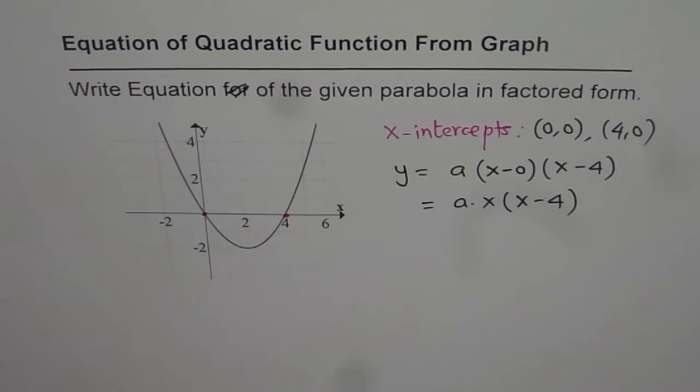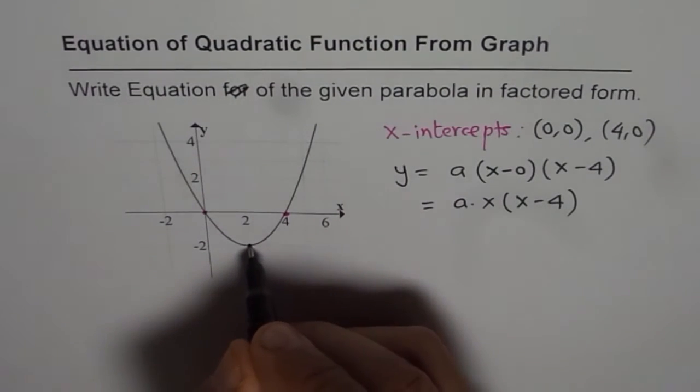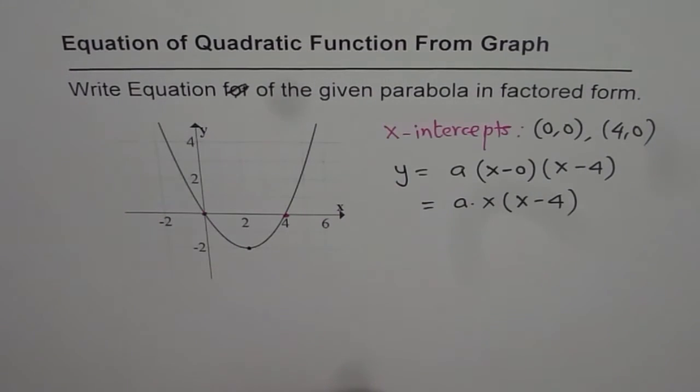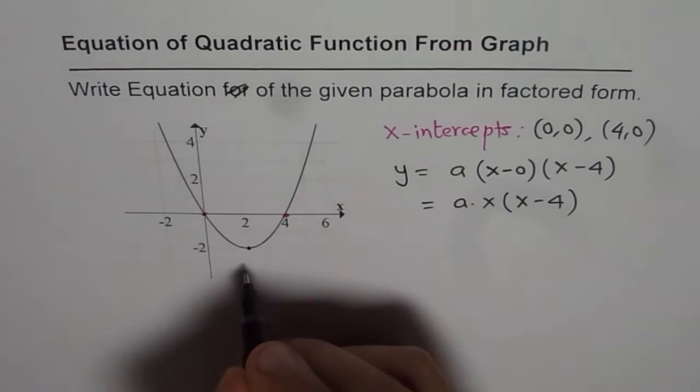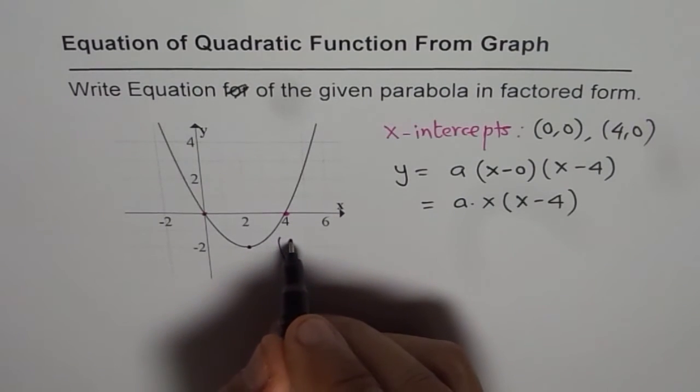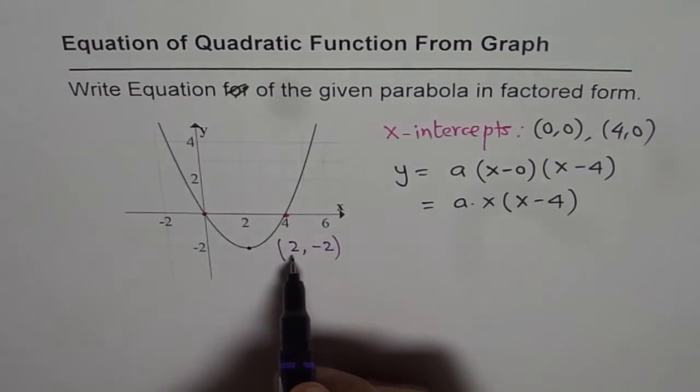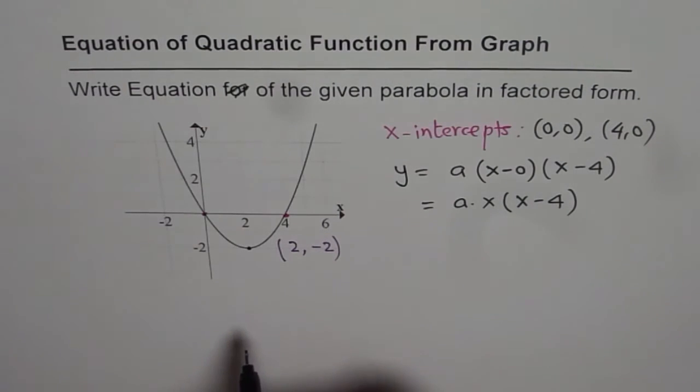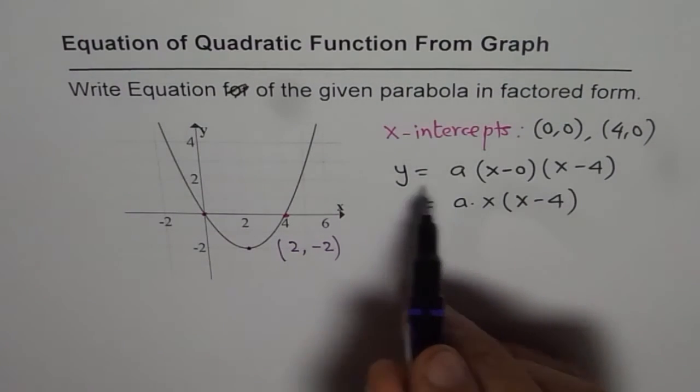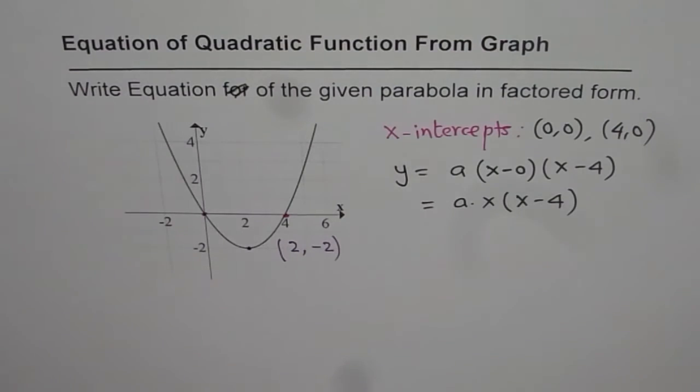Now to write equation of the given graph we need to identify one more point. So let us use this particular point which also happens to be the vertex. So the coordinates for this point are (2,-2). The x value is 2, y value is minus 2. So we will substitute these two values and find the value of a.